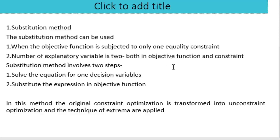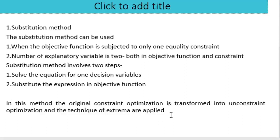The substitution method involves two steps: first, solve the constraint equation for one decision variable; second, substitute that expression into the objective function. In this method, the original constraint optimization is transformed into an unconstrained optimization, and techniques of extrema are applied.